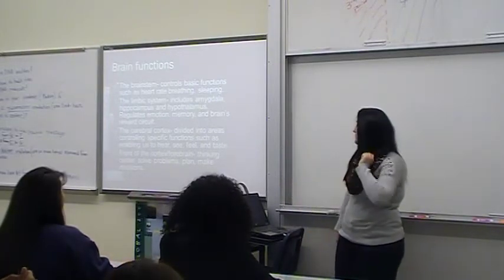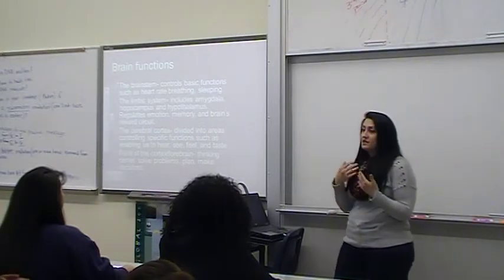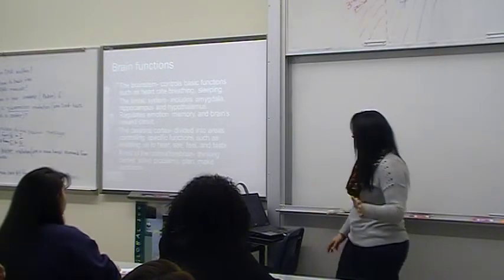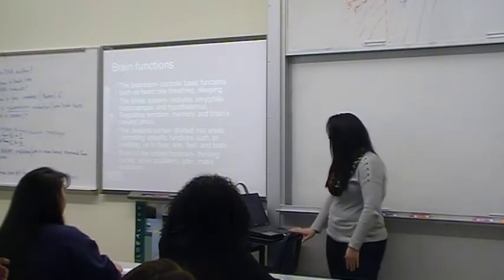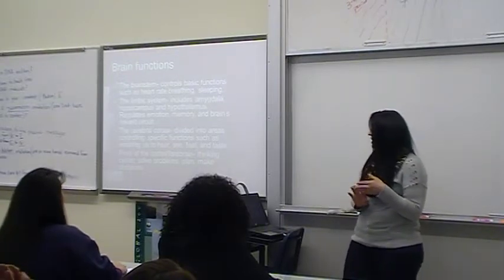The most important ones are the brain stem, which controls the basic functions such as heart rate and breathing. These are done unconsciously, and you don't have any control over the brain stem. And then there's the limbic system, which has the amygdala, the hippocampus, and the hypothalamus.